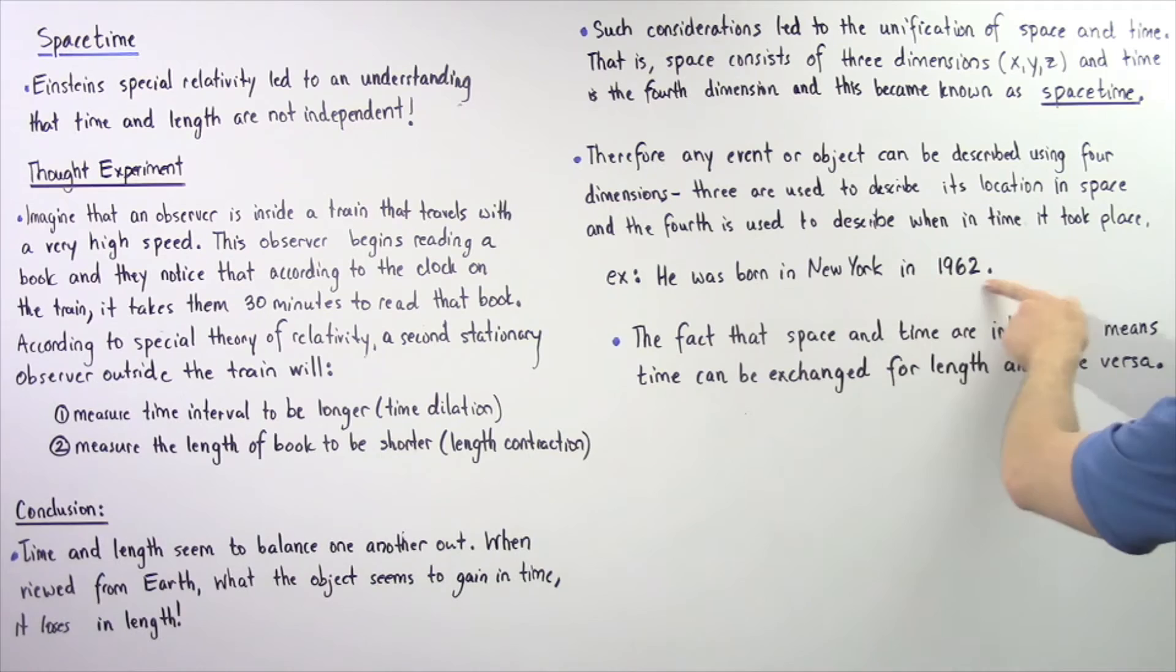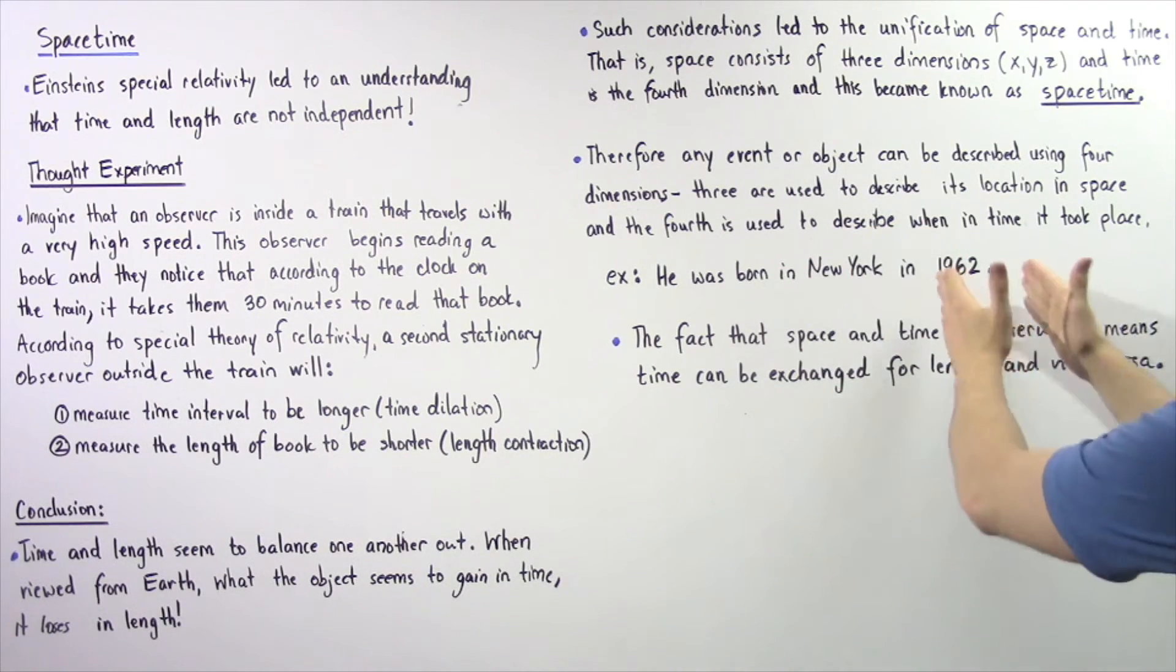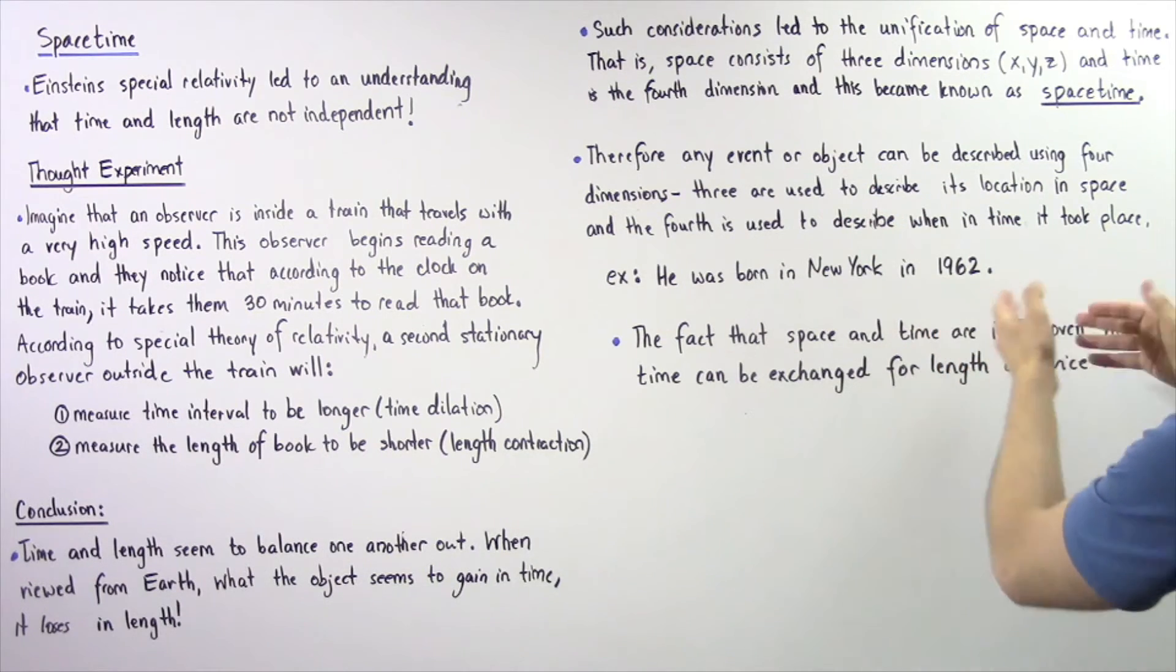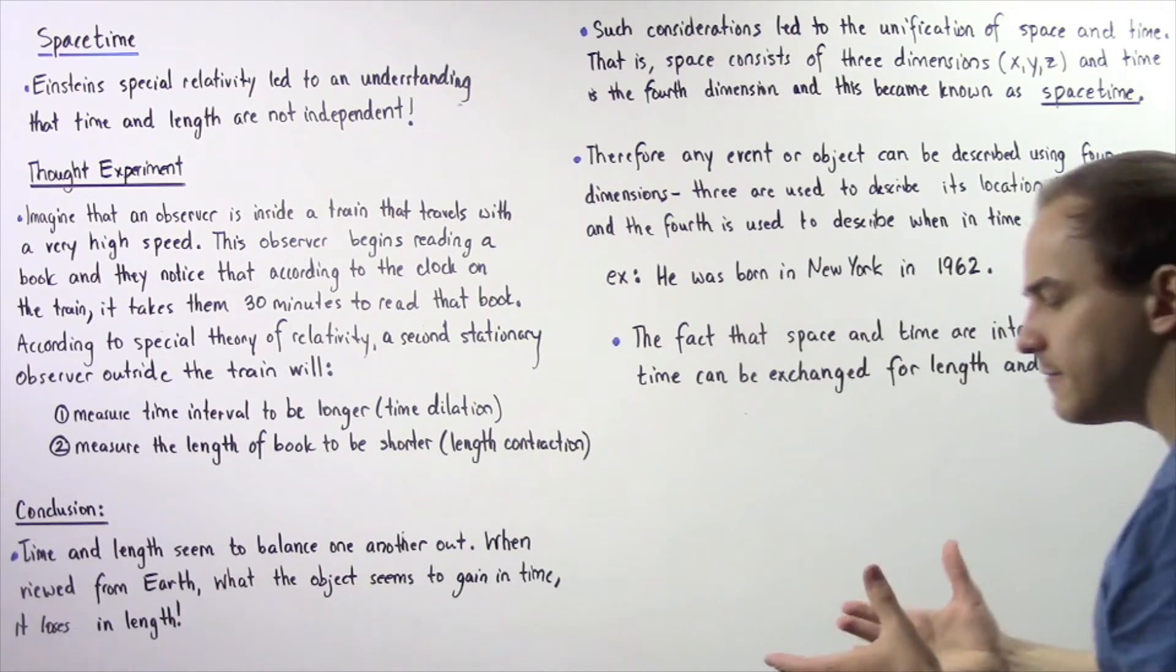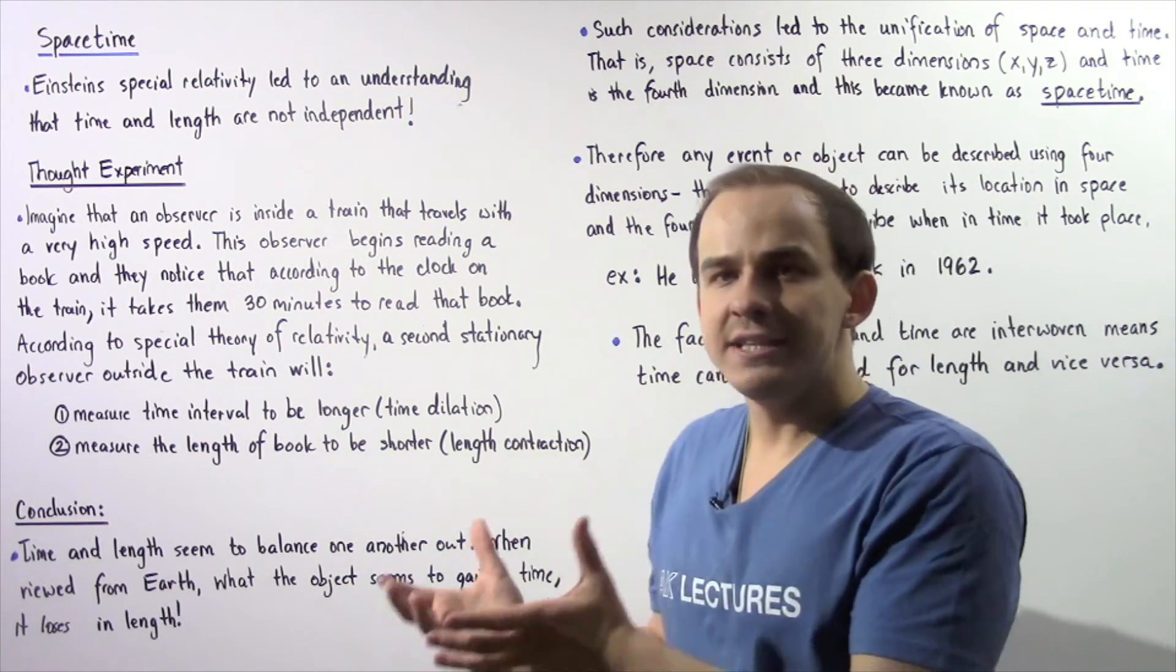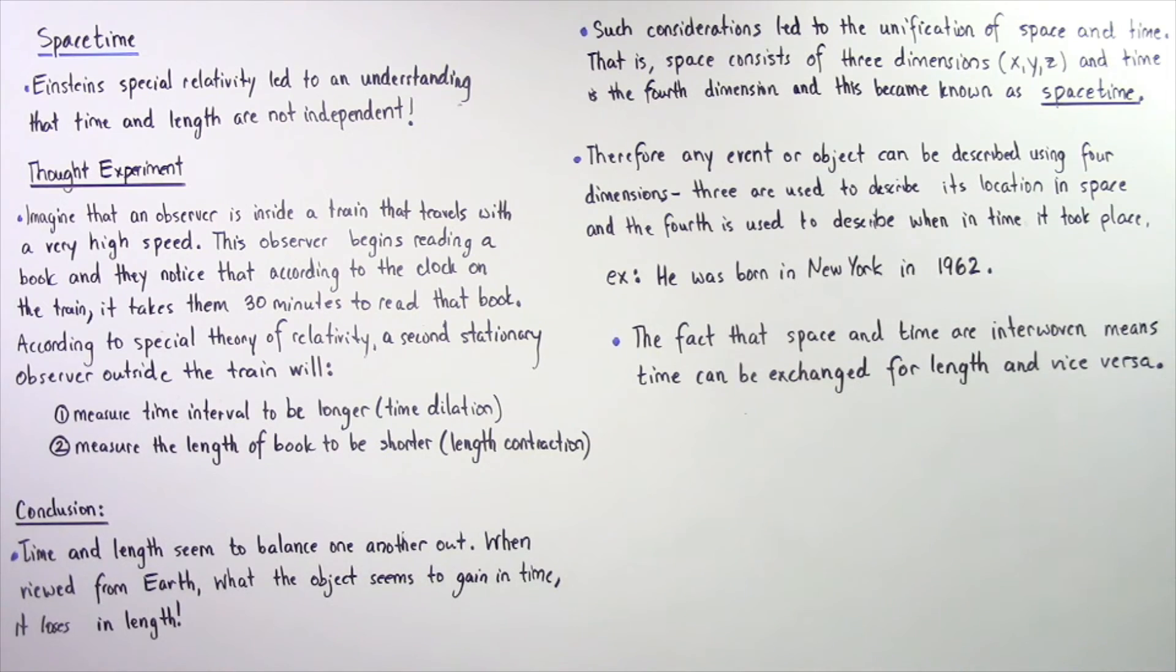The 1962 part means that is my fourth dimension—it describes when in time the event took place. And New York basically signifies the location in space where that event took place.